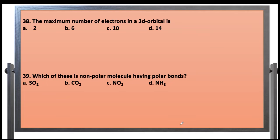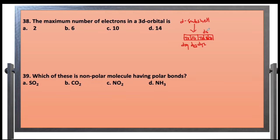Let's start from question number 38: The maximum number of electrons in 3D orbital is. Here we have the D subshell. D subshell consists of 5 D orbitals. So the maximum number of electrons in D subshell — each orbital is represented by a box, and each orbital can accommodate a maximum of two electrons.